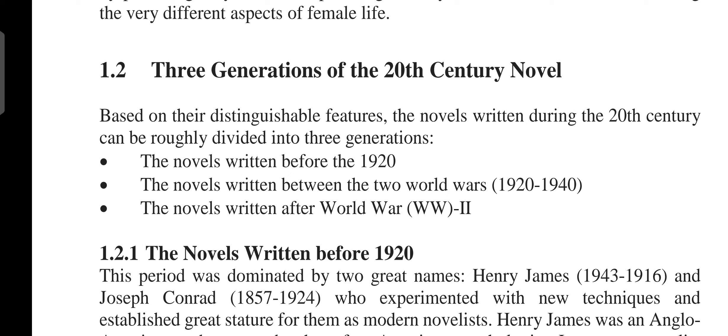To repeat this clearly: based on their distinguishable features, the novels written during the 20th century can be roughly divided into three generations — novels written before 1920, novels written between the two world wars from 1920 to 1940, and novels written after World War II. The novel written before 1920 will be the topic of my next lecture.